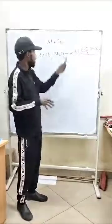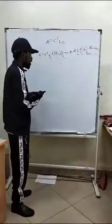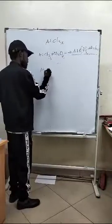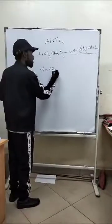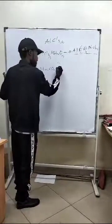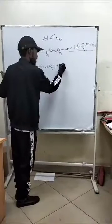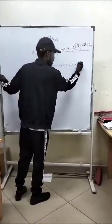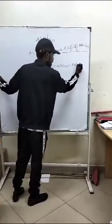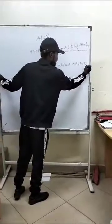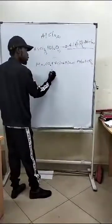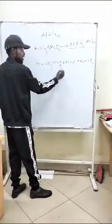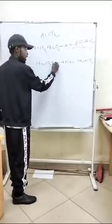Now, what will happen with sodium carbonate? The sodium carbonate will react with the HCl produced. This will form sodium chloride, water, and carbon dioxide. So you don't have a carbonate ion left — you don't have a carbonate ion left.